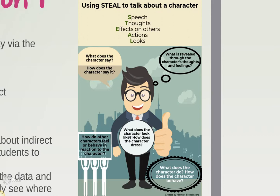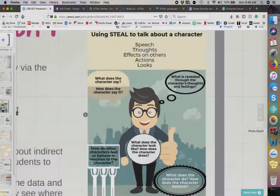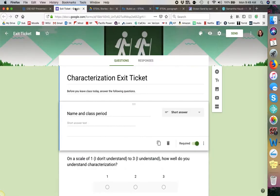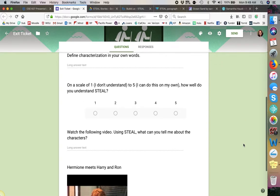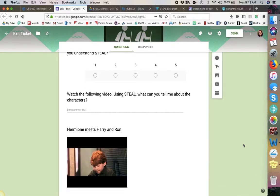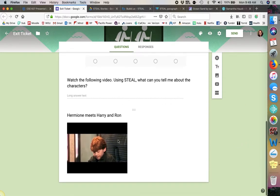This is the infographic. I think it could be easily changed to feature a specific character — so if we were doing Gatsby, we could do Gatsby, Nick, Daisy, anyone like that. It's pretty easy; it shows them directly where everything should be for STEAL. The exit ticket would look something like this — it's really simple, just a couple of questions. Students would scale it on one through three or one through five, and then they would watch a video clip and type in their answer.